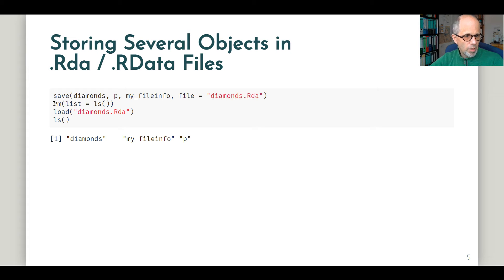Then I'm using this infamous line, rm list equals ls, to empty my global environment. And then I load this file back in. And then my environment contains these three objects: diamonds, my_fileinfo, and p. We can use this format to store several objects in one file. That's neat and nice to know. And that also applies to .rdata files, not only to .rda as shown here.